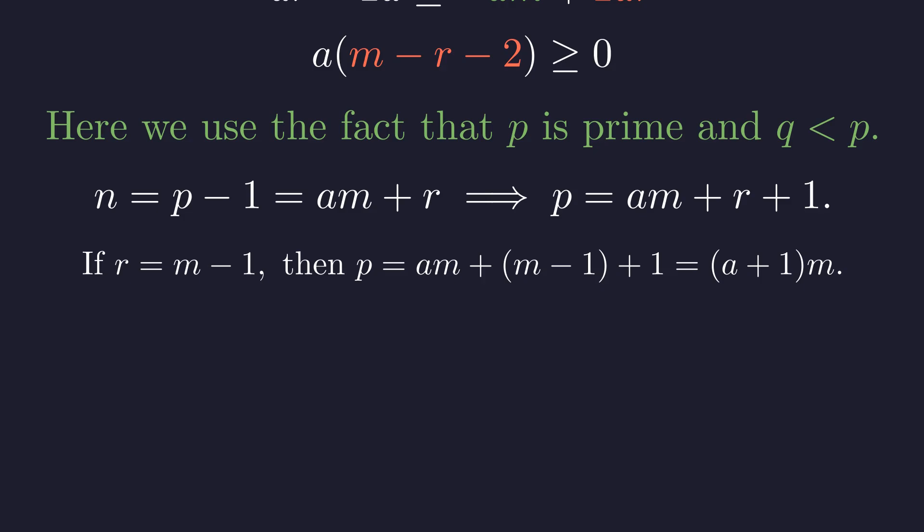Substituting this worst-case scenario gives us p equals (a plus 1) times m. But this is disaster—it means m divides p. And since we're in the case where a is at least 1, we know that m is at most n, which is p minus 1. So we'd have m is greater than 1 and less than p, and m would divide p. But that's impossible!